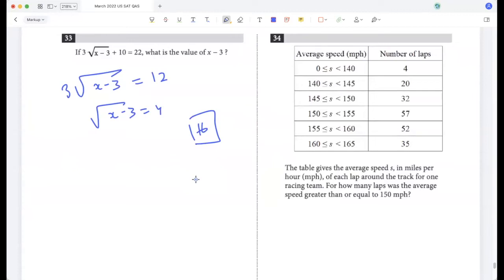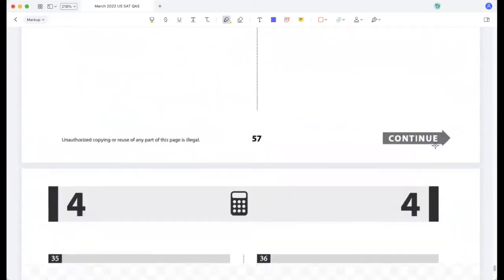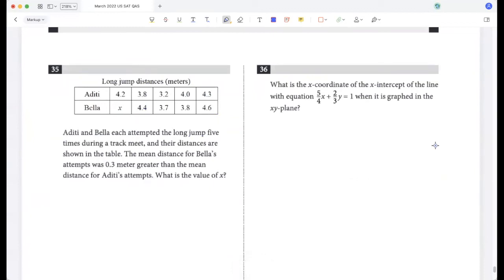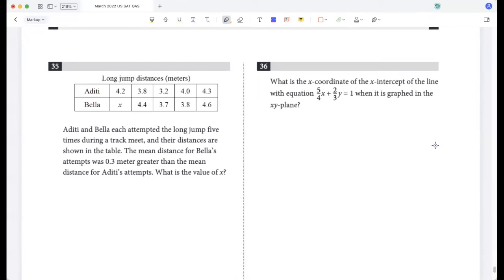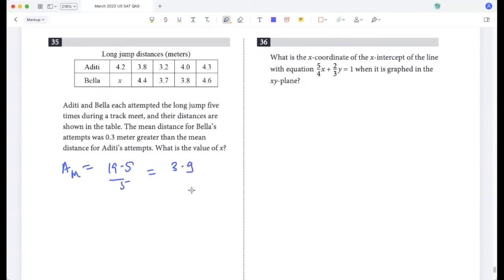The table gives the average speed in miles per hour of each lap around the track for one racing team. For how many laps was the average speed greater than or equal to 150? Greater than or equal to 150, how many laps? Seven and two, nine and five, 14 carry one, five and five, ten and one, eleven and three, fourteen. So 144.